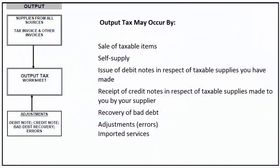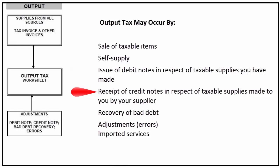Output tax may occur by the sale of taxable items, self-supply, the issue of debit notes in respect of taxable supplies you have made, the receipt of credit notes in respect of taxable supplies made to you by your supplier, recovery of bad debt, adjustments, and imported services.